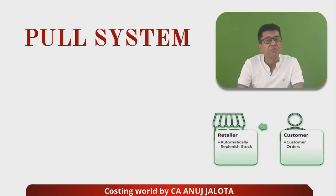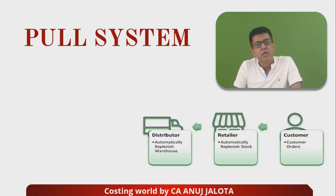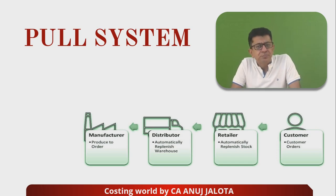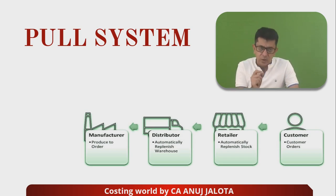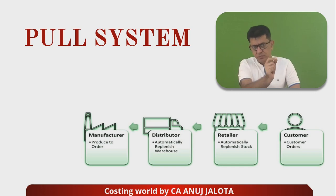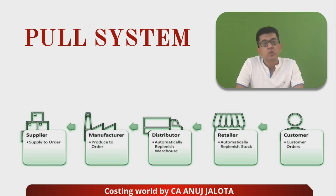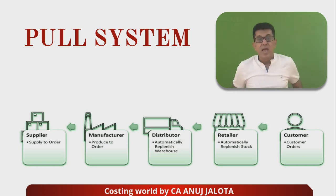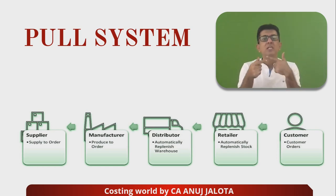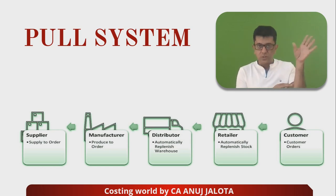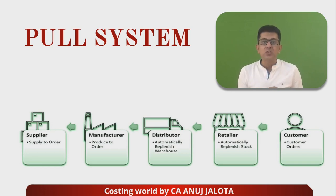The customer comes and gives the order to the retailer. The retailer gives this order to the distributor. The distributor sends this order to the manufacturer. The manufacturer will start producing, and whatever raw material is required to exactly produce what the customer has asked for — only that will be purchased from the supplier. This entire system is called the pull system. Inventory keeping is very less here, and this system is followed wherever consumer demand keeps changing and changes happen so fast that you cannot keep stock because it becomes outdated.